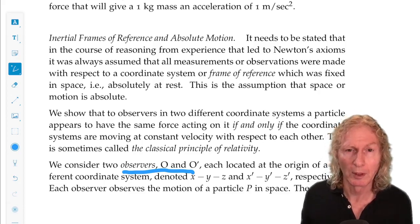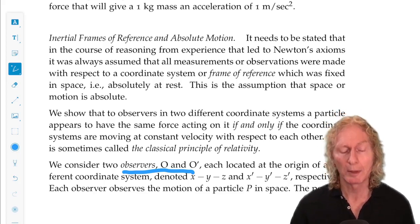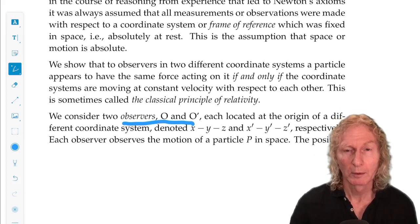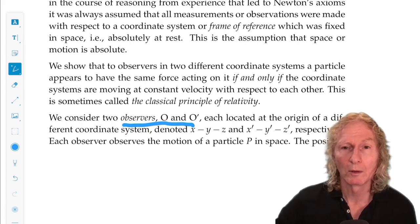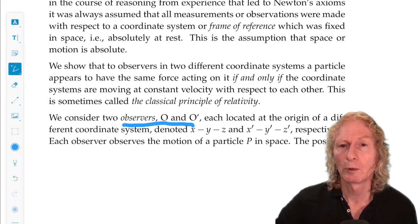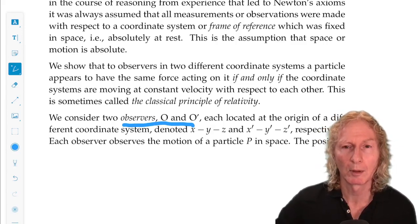An observer observes things relative to his or her coordinate system, O, and that coordinate system will be X, Y, Z, defined by the unit vectors I, J, K. And O prime will have his or her own coordinate system, X prime, Y prime, Z prime, defined by the unit vectors I prime, J prime, K prime.